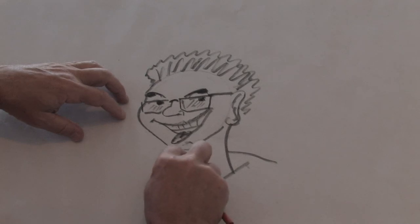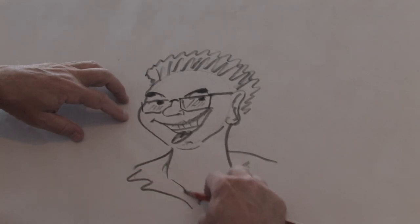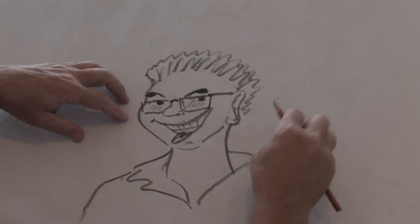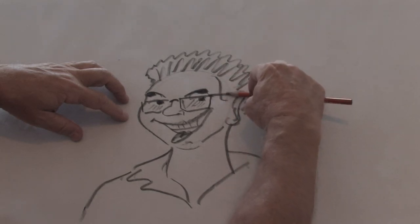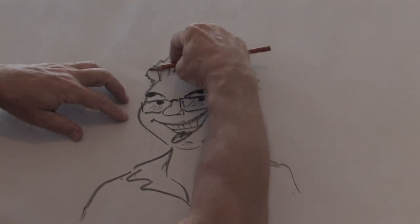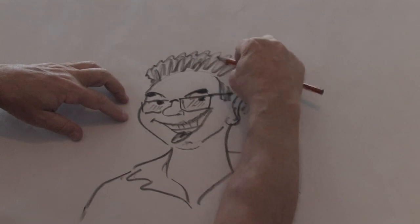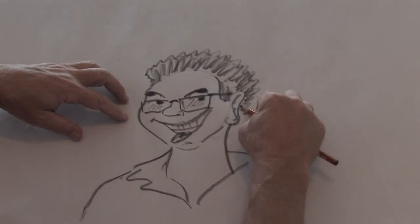And now we'll come down on his collar and we'll put a collar on him, and just bring it out here to his shoulders. We'll go back and accent a little bit more of his hair coming down on the side, give him a little bit of sideburns, and then we'll just go back and put a little shading in on that hair.